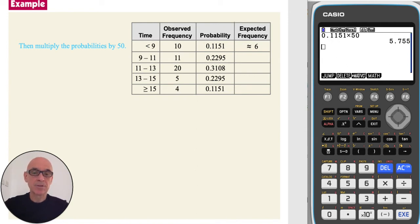Repeating the process for the other categories, rounding to a whole number and ensuring that the total is 50.